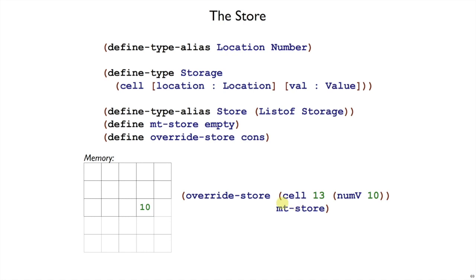And that cell is added onto the otherwise empty store using override store. This is the plate value that represents this conceptual picture of memory. And since it's a plate value, now we can pass it into Interp and get the results out of Interp.